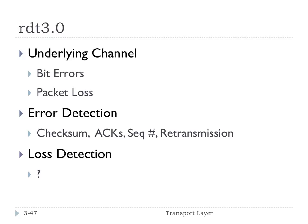Here is our last reliable data transfer protocol: RDT 3.0. In this case, we assume the worst — not only can we have bit errors, but we can also have packets lost altogether. We incorporate everything accumulated so far: checksums, acknowledgements, sequence numbers, and retransmission by the sender. All that handles error detection for bit errors from RDT 2.2. But we have a new problem now: packet loss. How do we detect loss?